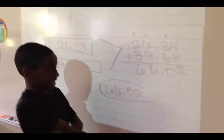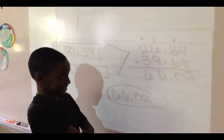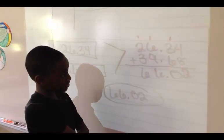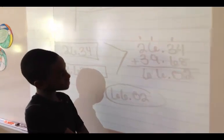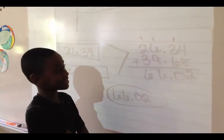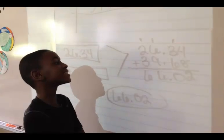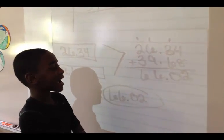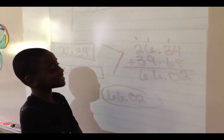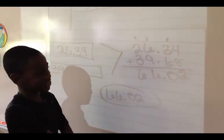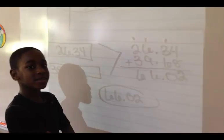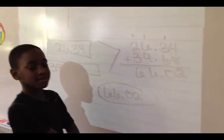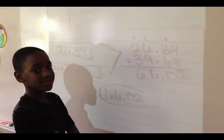How'd you add it? 26 and 34 hundredths plus 39 and 68 hundredths, and I got 66 and 2 hundredths. So you just did the standard algorithm where you added down? Mm-hmm. Great. Thank you.